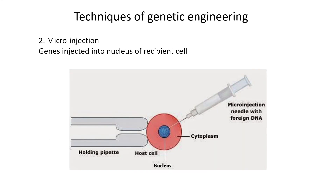The second technique is microinjection. As the word suggests, you literally inject the new gene into the cell. The genes are injected directly into the nucleus of the recipient cell using a specialized injection needle — it looks similar to a normal injection needle but slightly different in real life. This needle injects the DNA straight through into the nucleus.